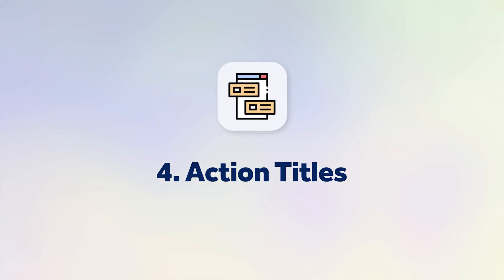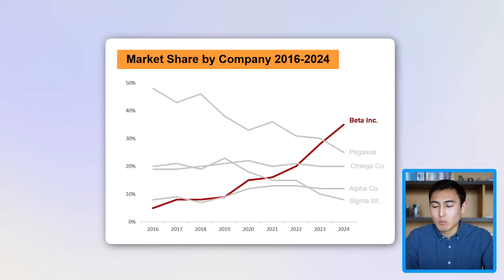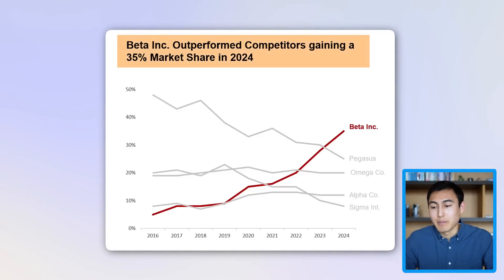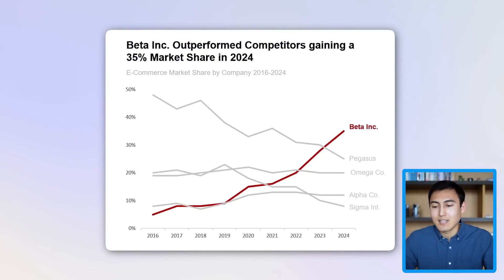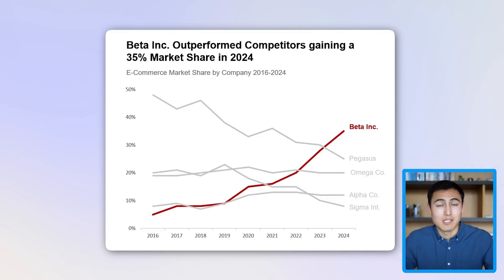Finally, we have what are known as action titles. Looking back at an earlier visual, the title just describes what's happening: 'Market share by company from 2016 to 2024.' That's what most people would intuitively write. But with an action title, it instead says 'Beta Inc. outperformed competitors, gaining a 35% market share in 2024,' with a subtitle that describes the chart in more detail. The key difference is the title gives you a message — a key takeaway — and ensures the chart isn't misinterpreted.